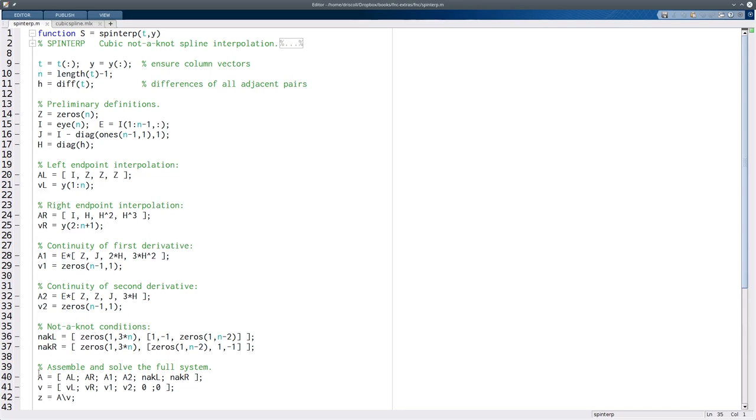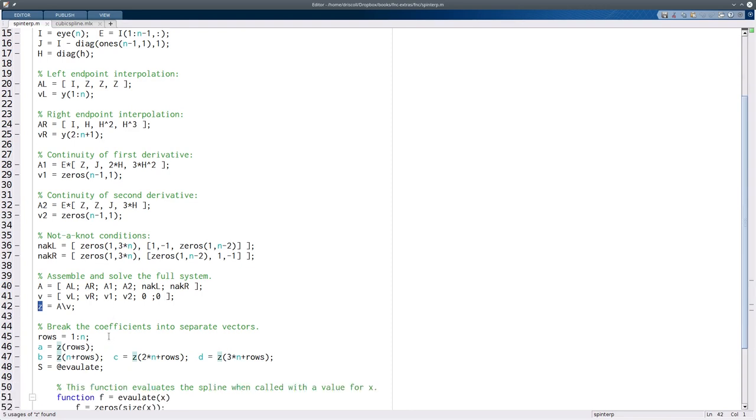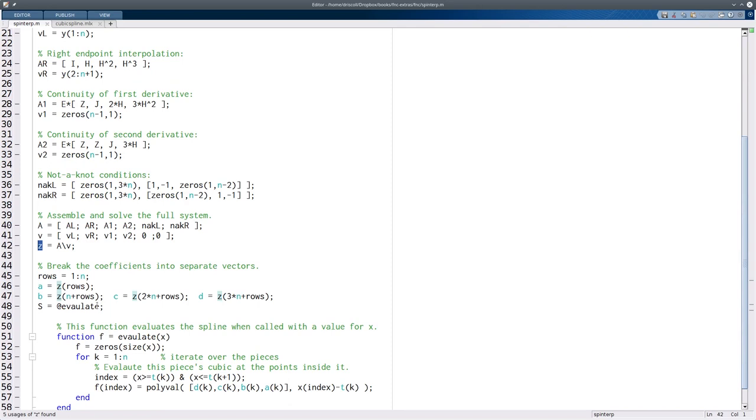You put all those together into a big matrix A, then you solve for the conditions, and you get Z. Z is a bunch of coefficients for all the different intervals, so you end up having to break those up into four groups.